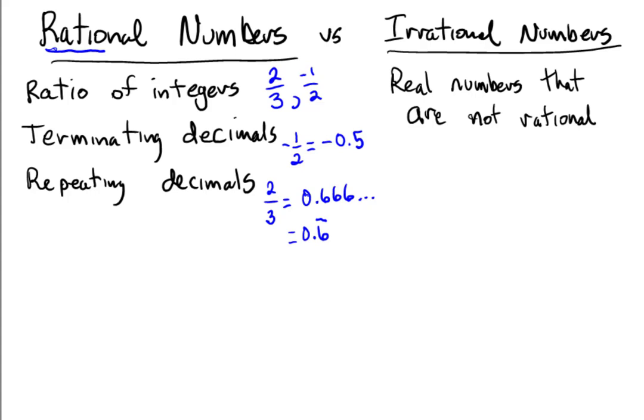So then irrational numbers are real numbers that are not rational. Some of the classic examples that show up are, for example, radical of numbers that aren't perfect squares. Those are irrational. They have decimal representations that never stop and never repeat, and they are not representable as ratios of integers.